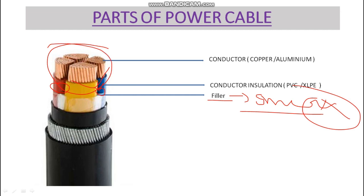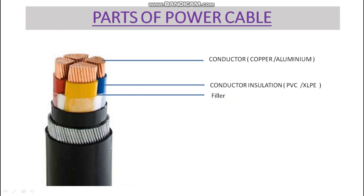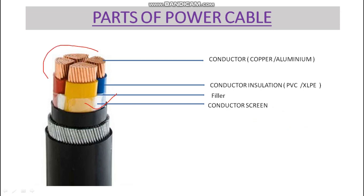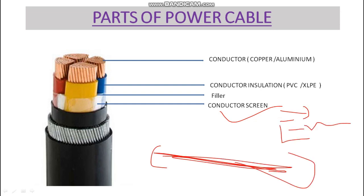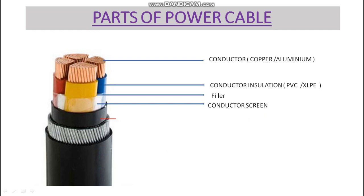Above the filler, as you can see, there is a conductor screen. This conductor screen helps to form the magnetic field in a uniform manner and protects against electromagnetic interference with other communication cables.